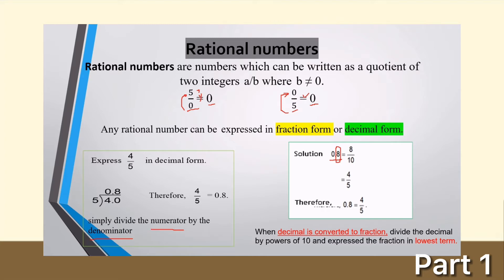So that gives us 8 over 10. Since the two numbers are divisible by 2, you can divide both by 2. Eight divided by 2 is 4, and 10 divided by 2 is 5. Therefore, 0.8 is equal to 4 over 5.